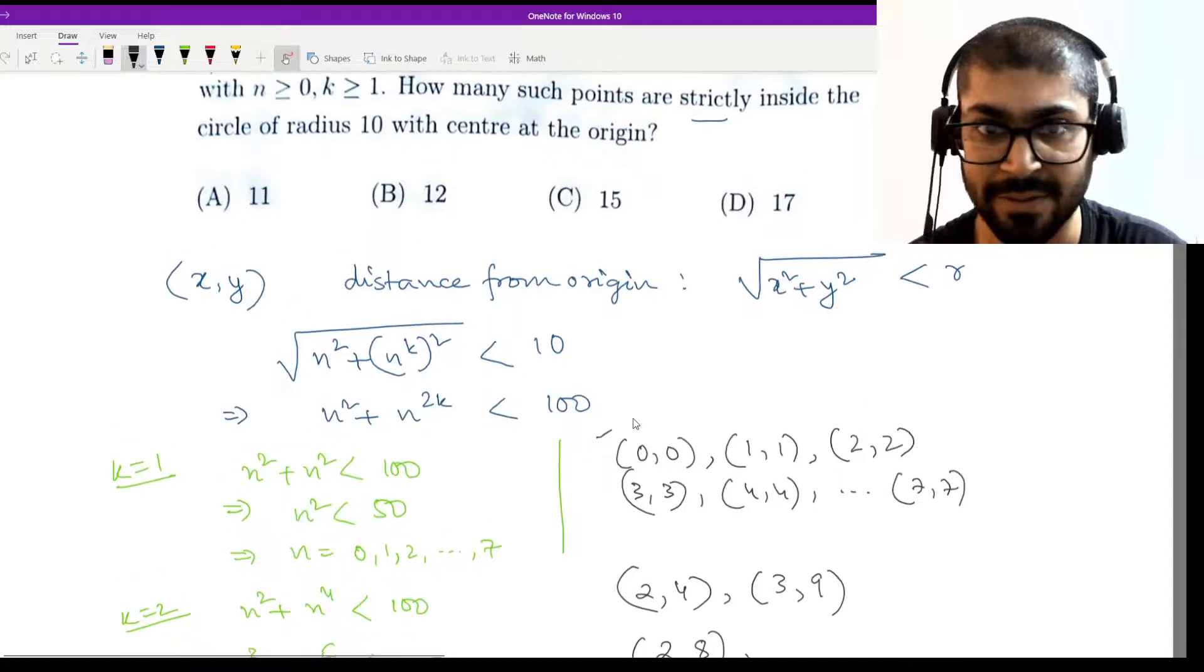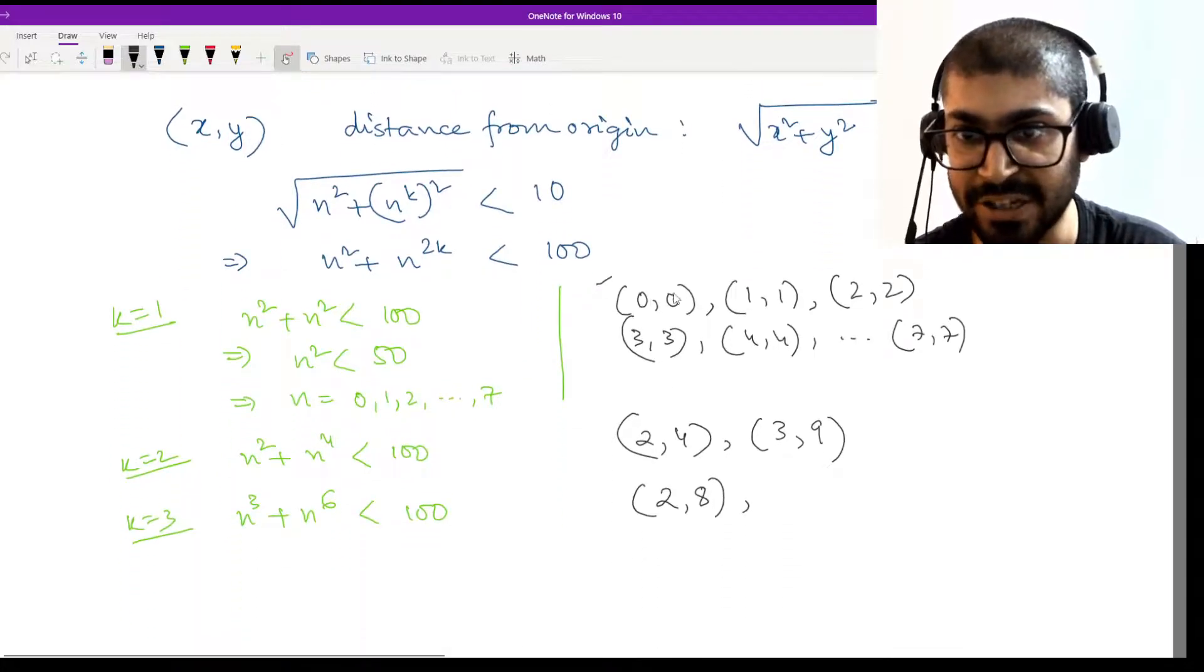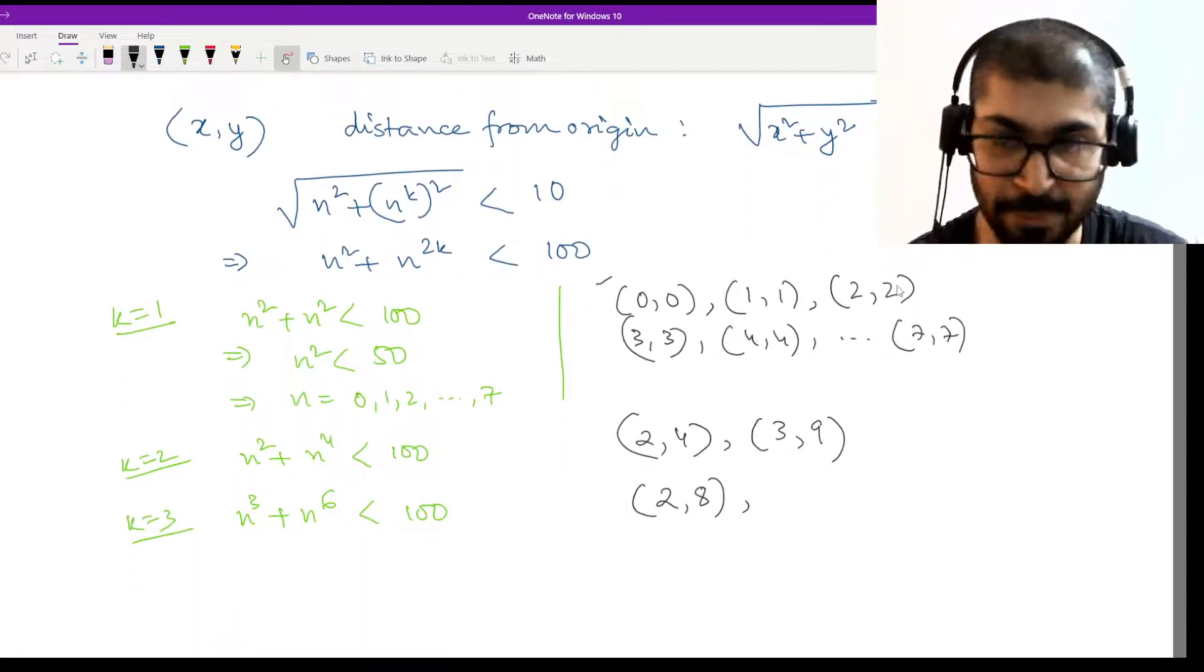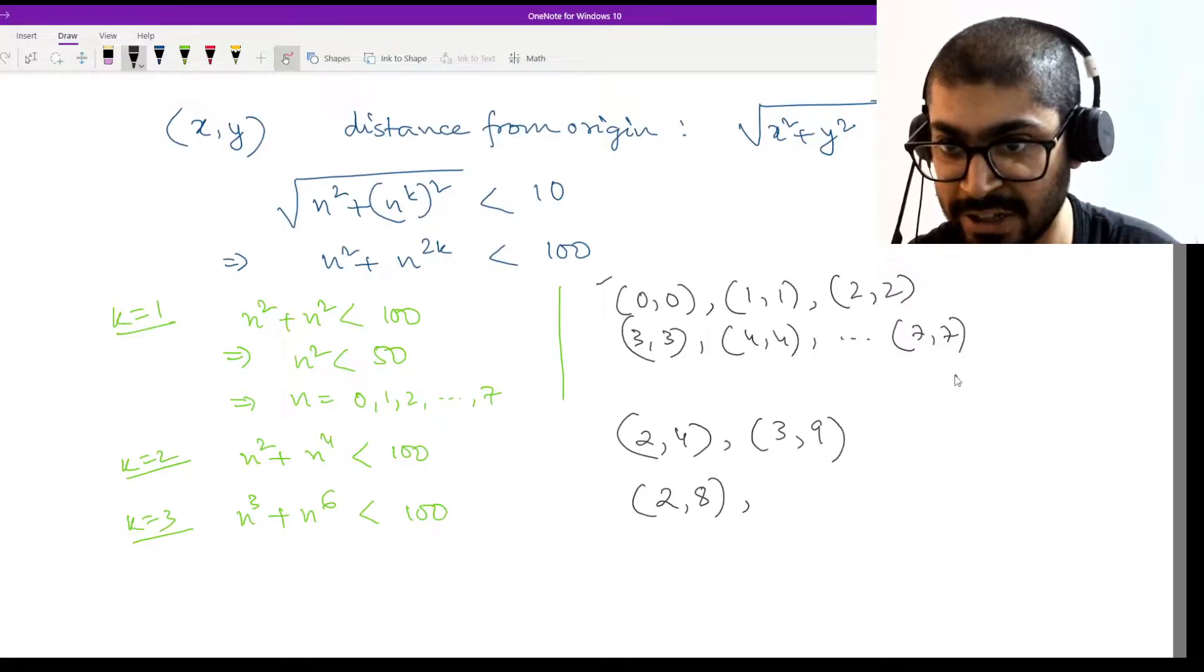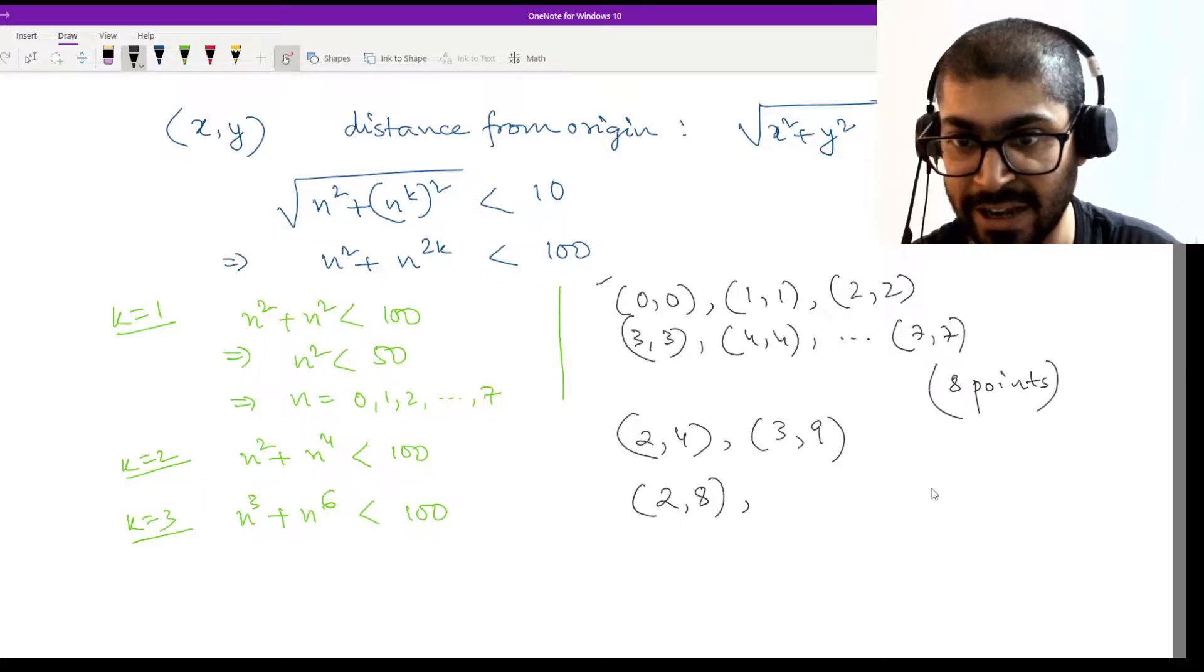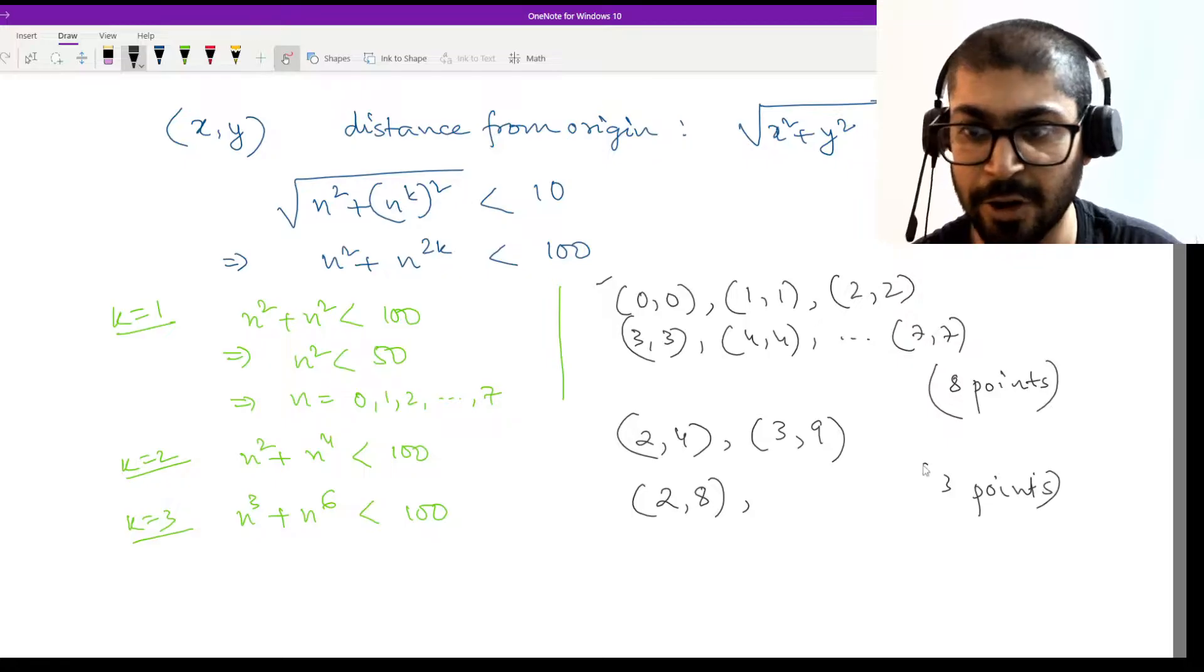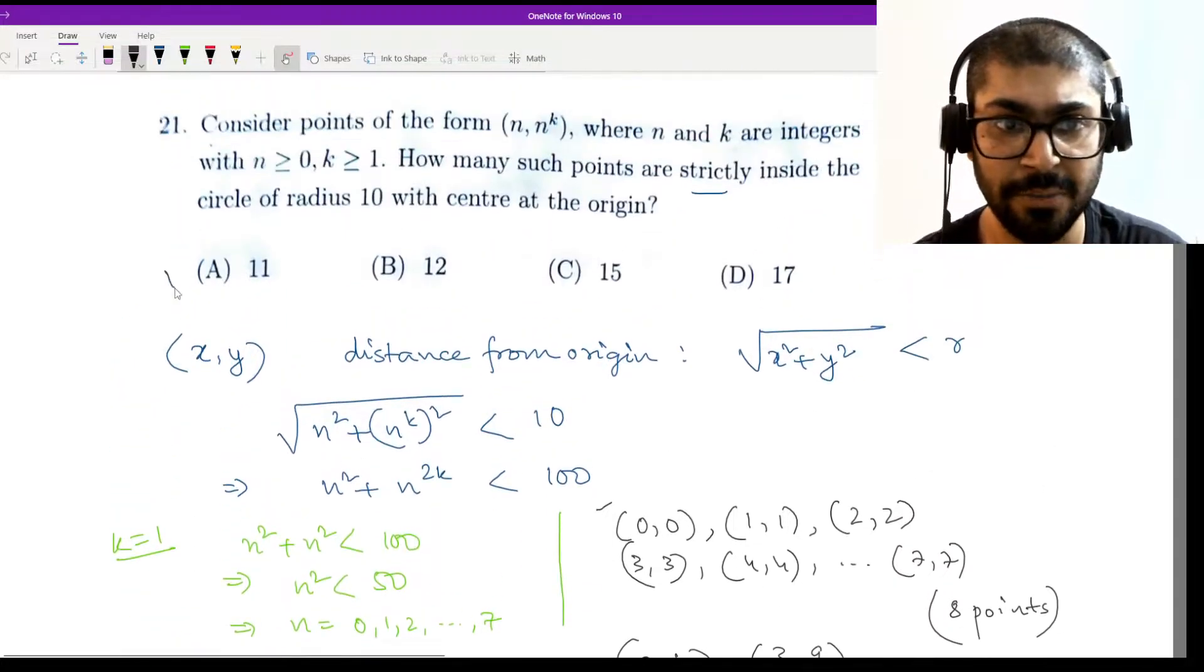So these are the only points that we are having. I have 0 to 7, so there will be 8 points here. From 0 to 7, and here you have 3 additional points, so in total you are going to have 11 points. That will be option A.